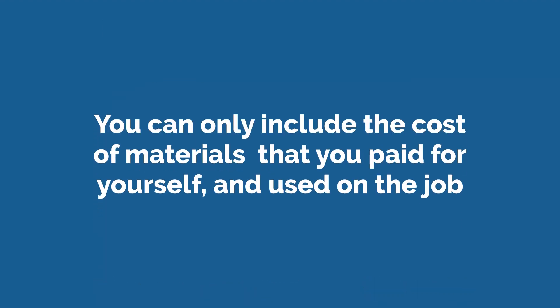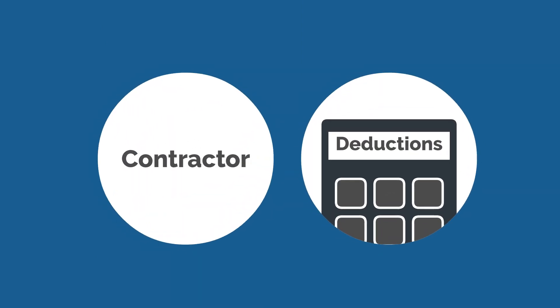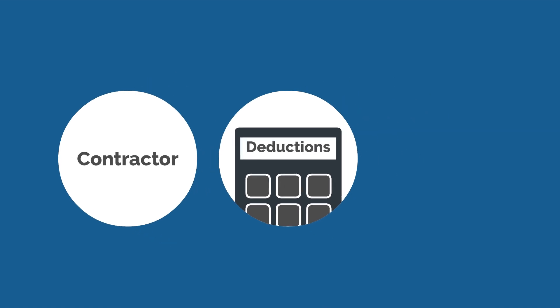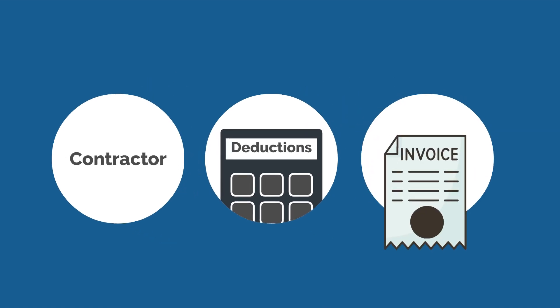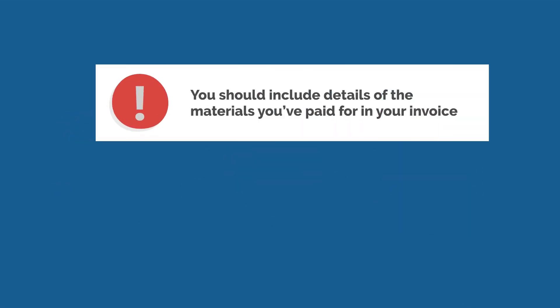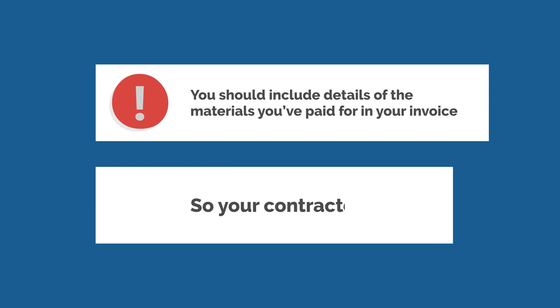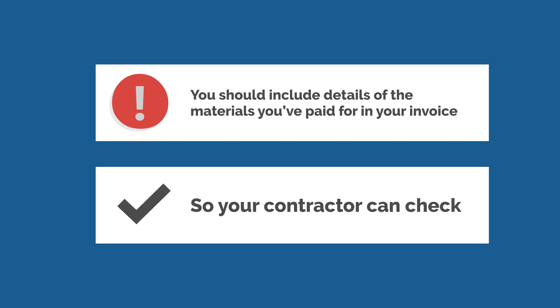You can only include the cost of materials that you paid for yourself and used on the job. If your contractor makes CIS deductions from your payments, HMRC requires your contractor to make sure that the cost of any materials is correct. You should include details of the materials you've paid for in your invoice, so your contractor can check.